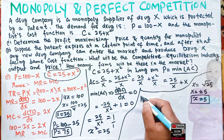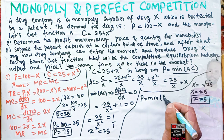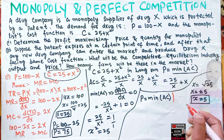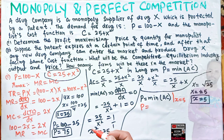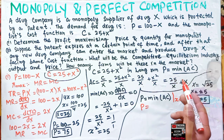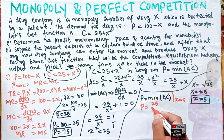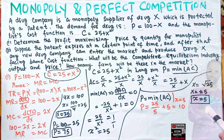The price equals the minimum of AC at x = 5. Substituting into AC = 25/x + x: we get 25/5 + 5 = 5 + 5 = 10. So price equals 10 in competitive equilibrium, and each firm produces 5 units.